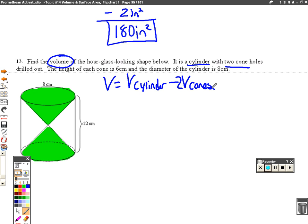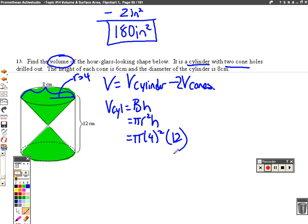So let's find the volume of the cylinder first. Volume of the cylinder is just big B times H. And big B is a circle, so it's pi R squared times H. And if the diameter, which is what this 8 is, is 8, then that means the radius will just be 4. So this is pi times 4 squared times the height of the whole cylinder, which is 12. So we've got 4 squared, which is just 16. So times 12, we get 192 pi for the volume of that cylinder.